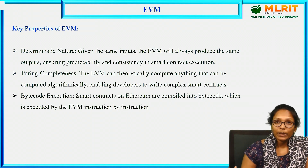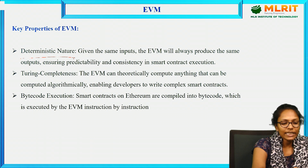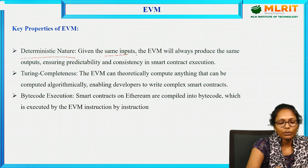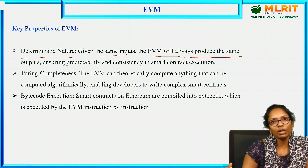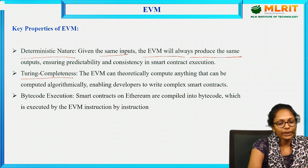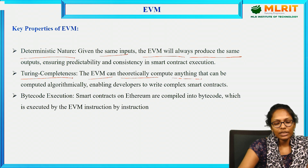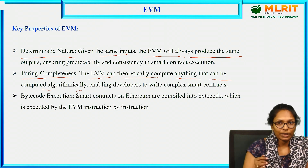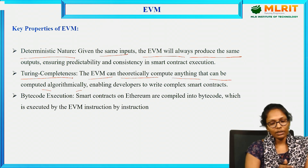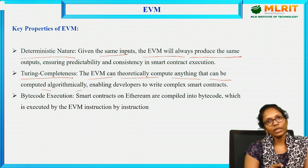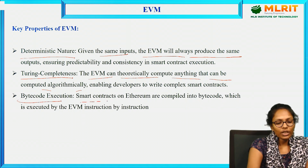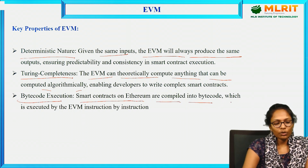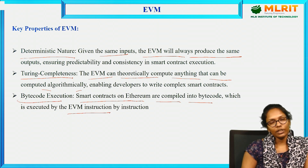The key properties of EVM: First, it is deterministic in nature — given the same input, the EVM will always produce the same output, every time. It does not generate random output. Second, Turing completeness — the EVM can theoretically compute anything that can be computed algorithmically, so whatever you calculate algorithmically can also be achieved using a smart contract. Third, bytecode execution — smart contracts in Ethereum are compiled into bytecode, which is executed by the EVM instruction by instruction.